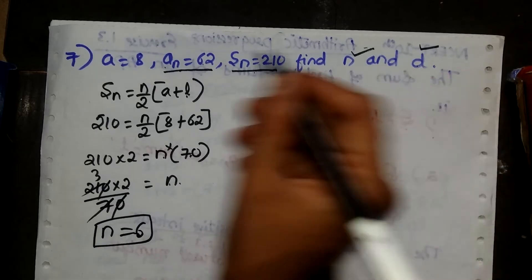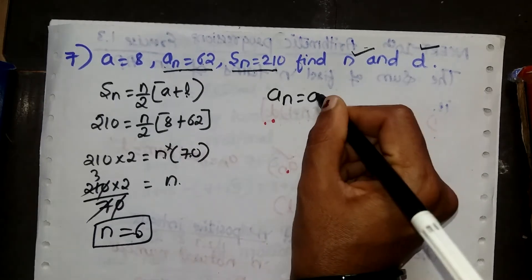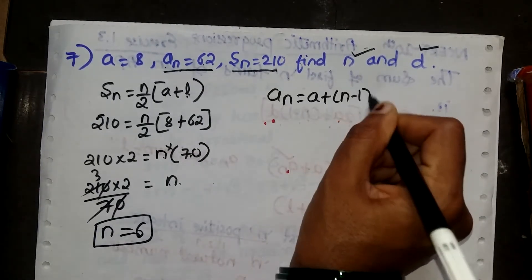We can easily find out d by using the formula: an equals a plus (n minus 1) into d.